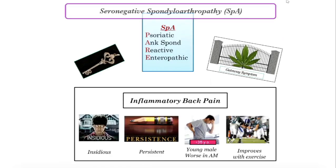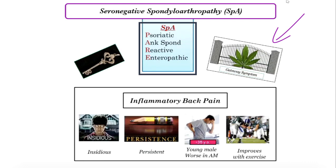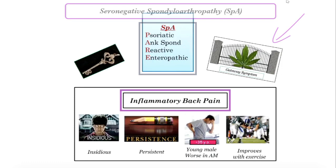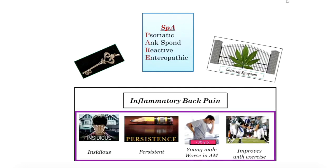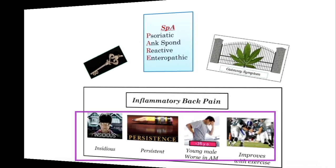Seronegative spondyloarthropathy: when I say it's a gateway symptom, there are really four separate entities that can give you this, making it an absolute gateway — and I'm talking now about inflammatory back pain. Insidious onset, big deal — comes on over a period of months, does persist. This is the rheumatologic disorder that affects males more than females, specifically young men. Worse in the morning, better with activity. That's your inflammatory back pain.